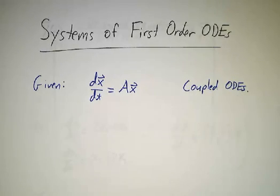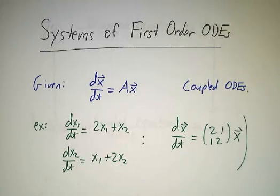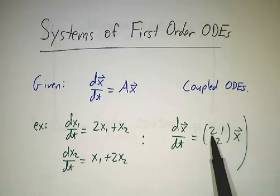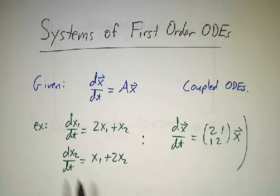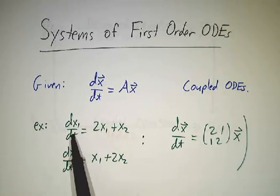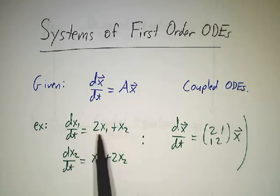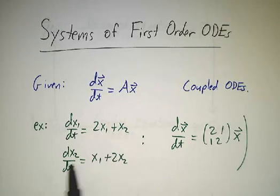So these are coupled ordinary differential equations. For example, if we have our old friend the matrix 2, 1, 1, 2, we're talking about a system of equations where the derivative of the first variable is twice the first variable plus the second, the derivative of the second variable is the first plus twice the second.